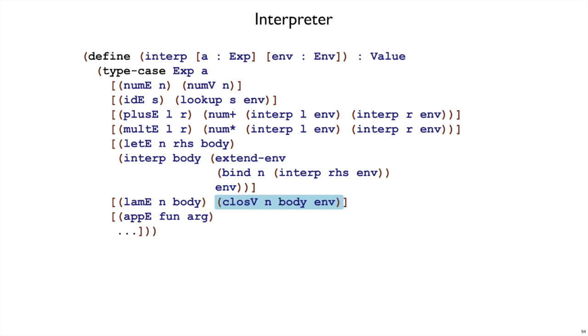So lambda creates a closure, and there's nothing else to do. We just return that closure. A lambda, in other words, is similar to a literal number expression. When you have the number 7, the value is just the number 7. When you have a lambda, the value is just the function represented by the lambda. Except, conceptually, we have to apply those substitutions in the body, and we implement that by keeping the body together with the environment. We defer evaluating the body until the function is called.